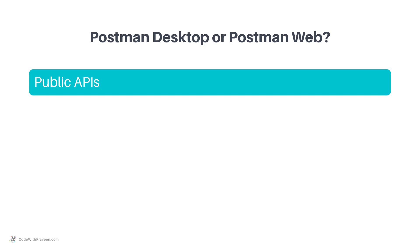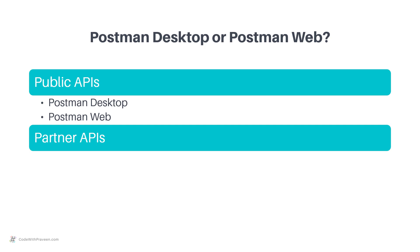When working with APIs, you need to first check which type you are currently going to work on. If your API is a Public API, then either Postman desktop or the web application is fine, because the API is hosted on the public internet. When it comes to Partner APIs, both desktop and web are still okay — assuming the Partner API is hosted on the public network, Postman web is fine. However, if the Partner API is within a local network such as at your site or customer premises, then the Postman desktop version is the best option.